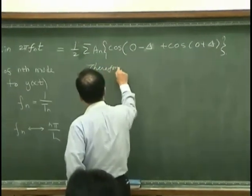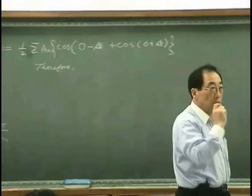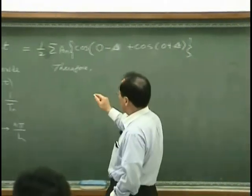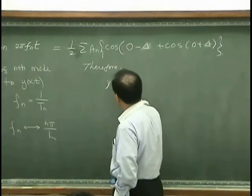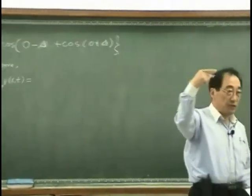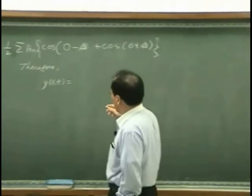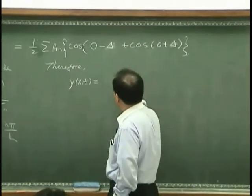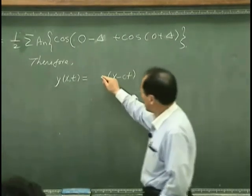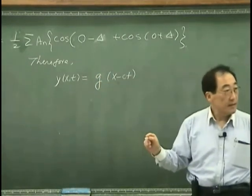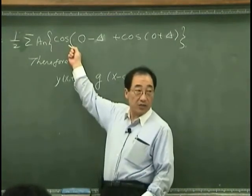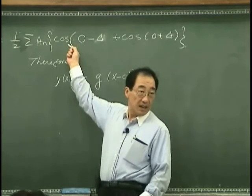Therefore, one could say that the general traveling wave, or specifically speaking, displacement of a general traveling wave, can be expressed as right-going wave that has a shape of G. This is the right-going wave that has a shape of cosine.